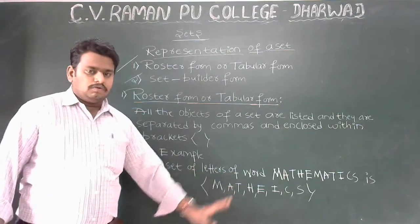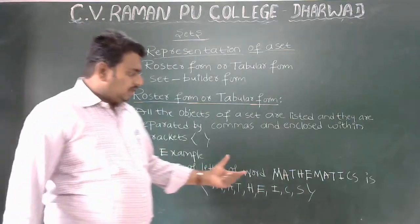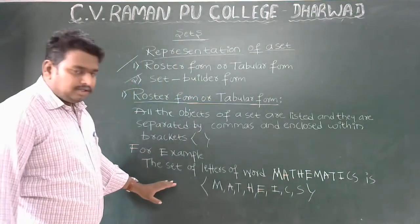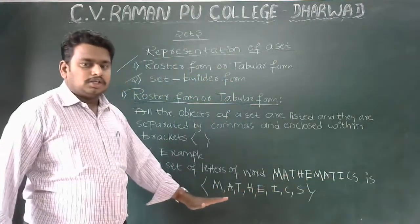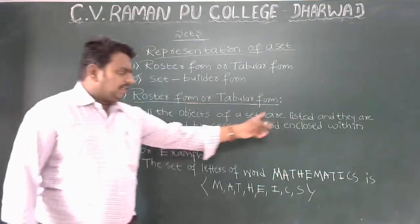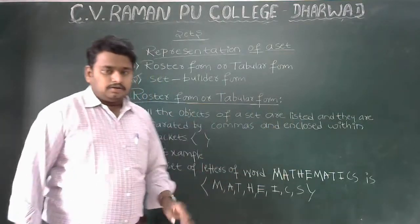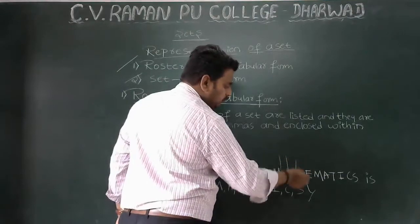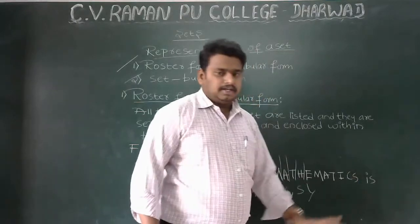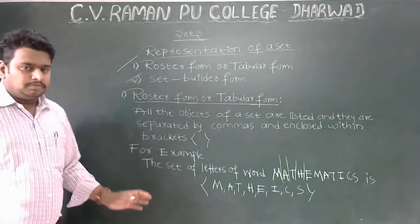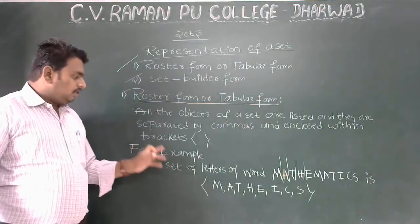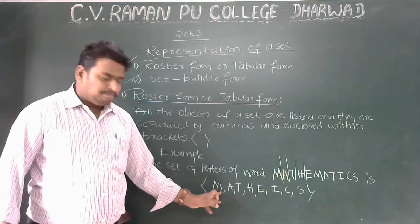For example, consider the set of letters of the word 'mathematics'. All the distinct objects — M, A, T, H, E, I, C, S — are listed, separated by commas, and enclosed within brackets.